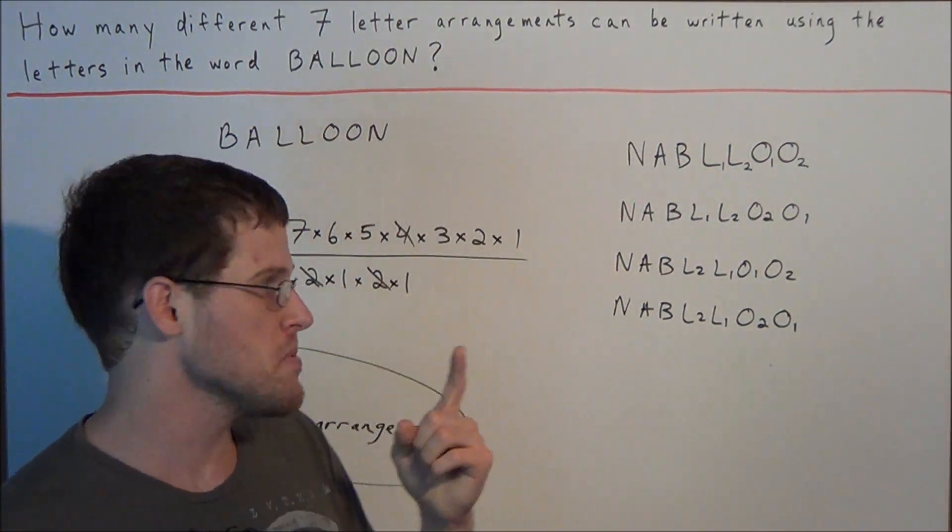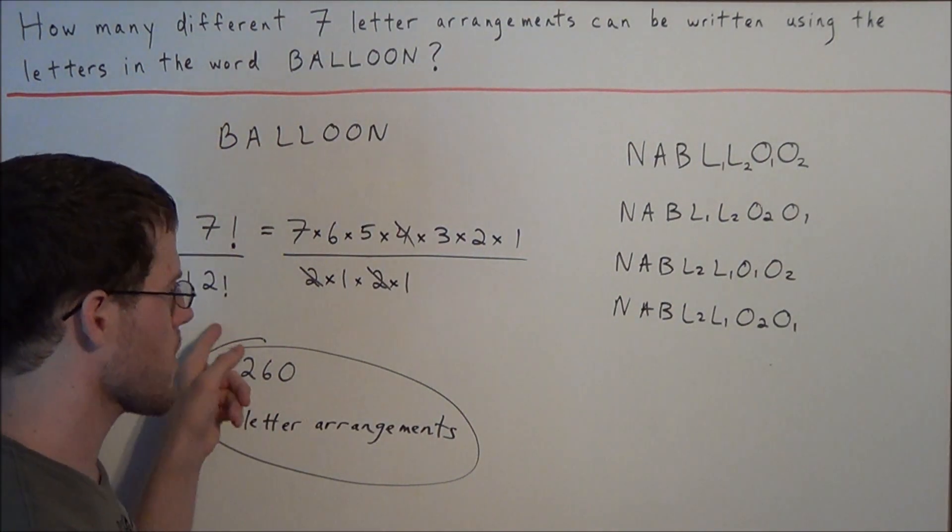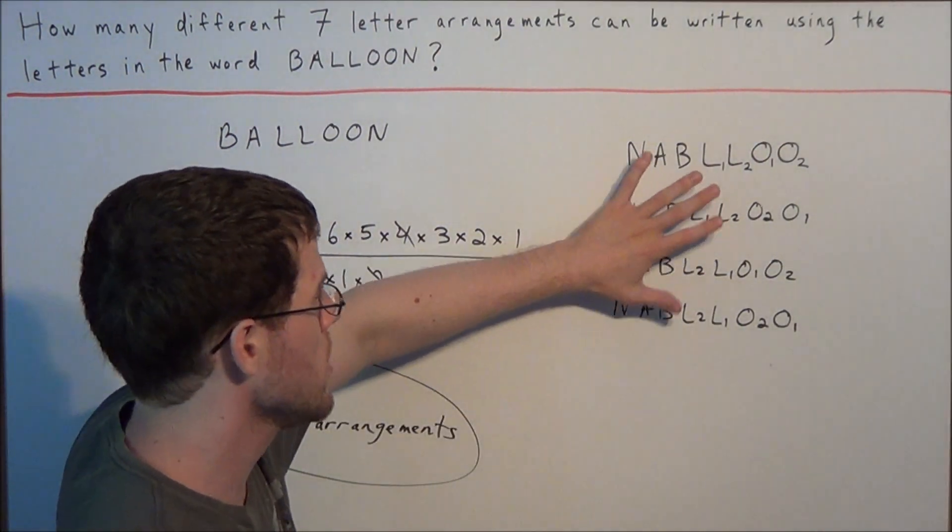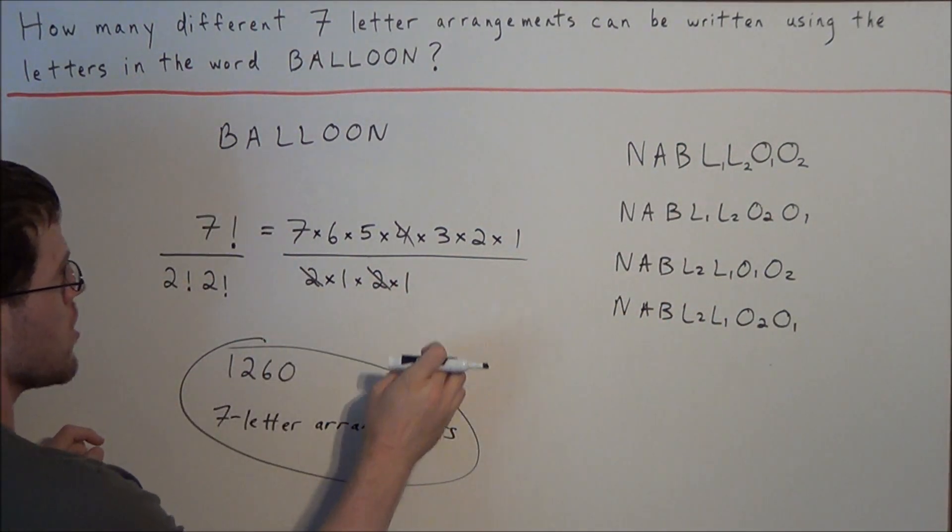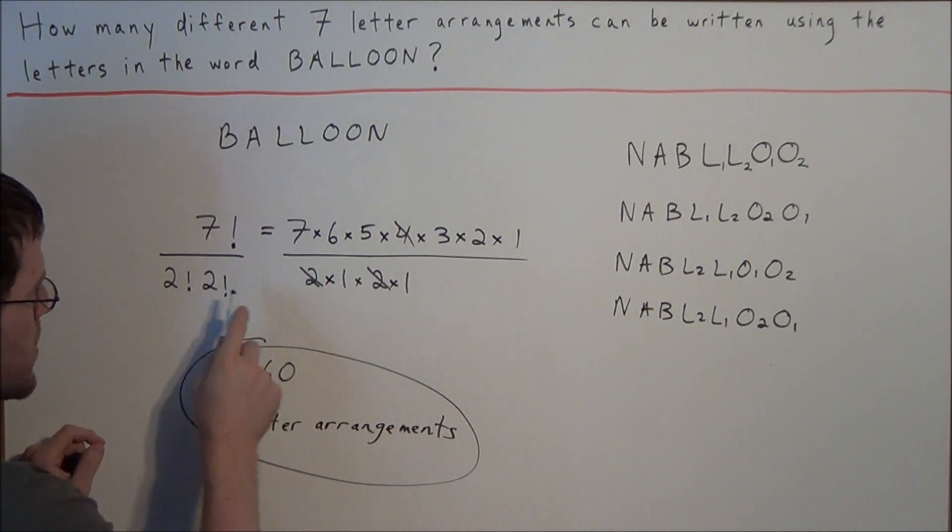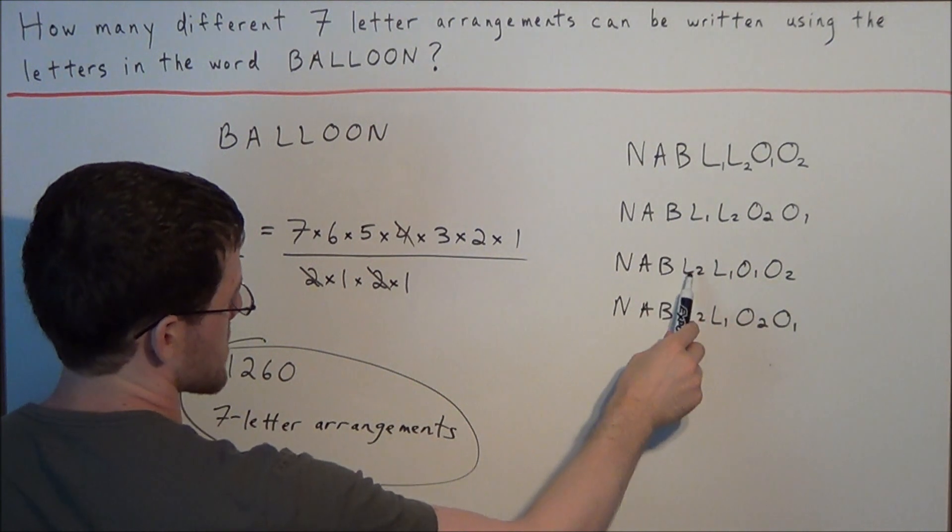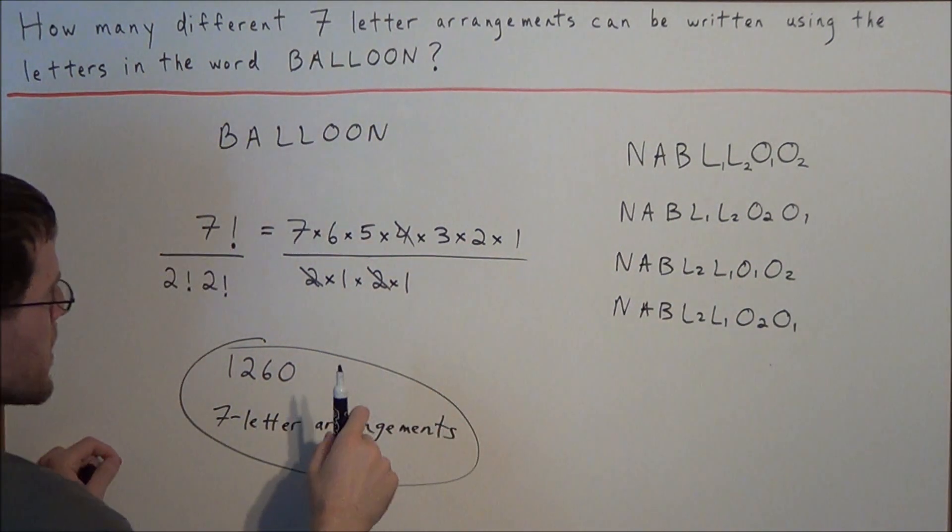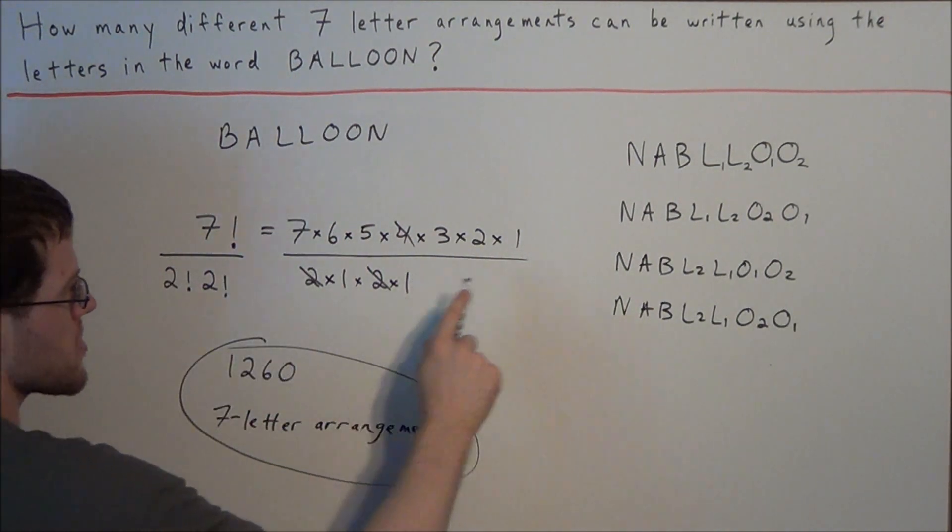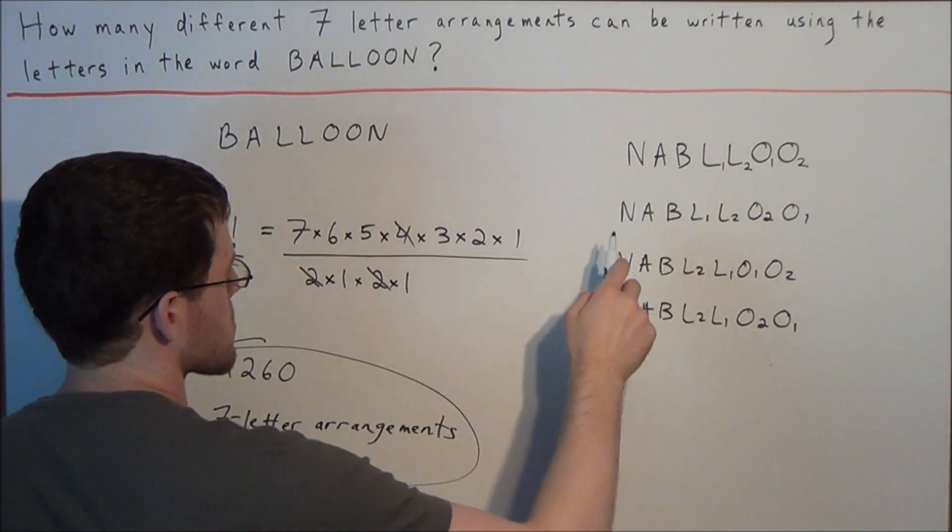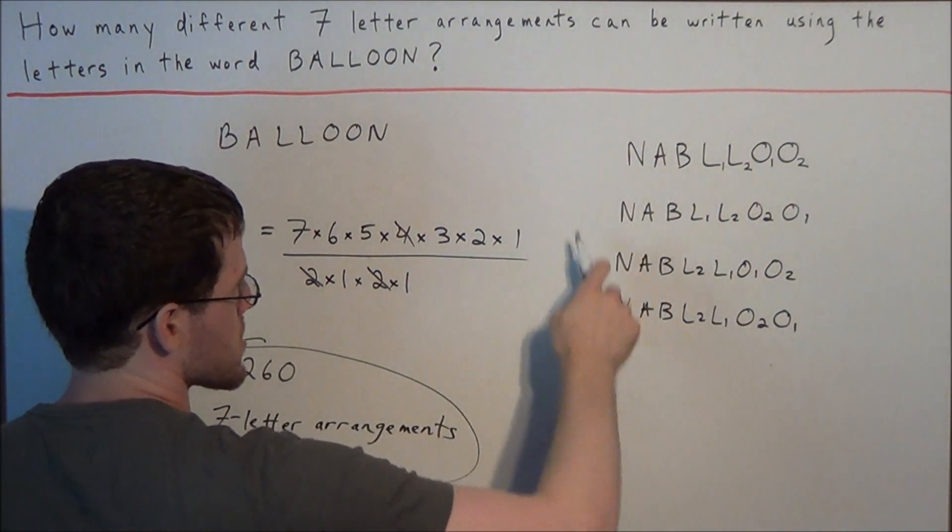So for any single permutation or any single arrangement, if we did not divide by two factorial two factorial, it would count each permutation four times. And that's exactly what happens here in the denominator. Notice there were two factorial ways to arrange the two L's. We could put the first L first, or we could put the second L first. But we're also pairing that with the fact that there were two repeating O's. So there are two factorial ways to arrange the O's. So now when we combine those together, there were 2 × 2, there were four ways to arrange any single permutation.